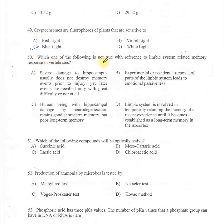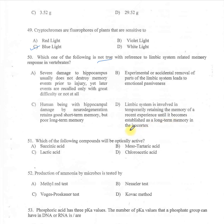Question 50 (limbic system): Which one is not true regarding limbic system related memory response in vertebrates? A: Severe damage to hippocampus usually does not destroy prior memories yet later events are recalled with great difficulty. B: Removal of parts of limbic system leads to emotional passiveness. C: Hippocampal damage by neurodegeneration retains good short-term memory but poor long-term memory. D: Limbic system temporarily retains memory of recent experience until established as long-term memory in the isocortex. The answer — not true — is option C.